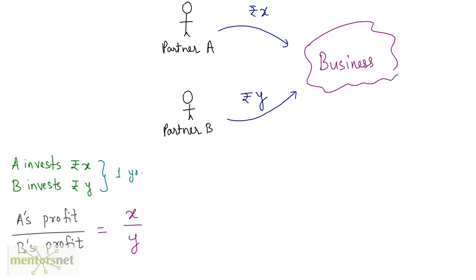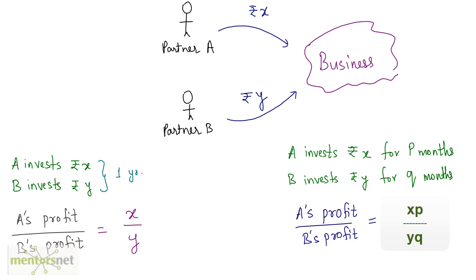If the investments are for different time periods, let us say that A invests x rupees for p months and B invests y rupees for q months, then the ratio of the profit of A to the profit of B becomes the compounded ratio of the months and the amount they invested in. So I can write the compounded ratio of x and y and p and q.